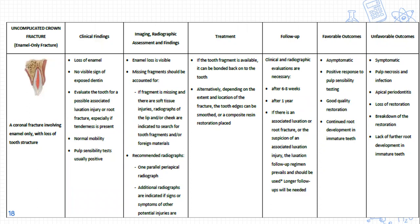Radiographic assessment: enamel loss is visible; missing fragment must be accounted for. If the fragment is missing and soft tissue injuries are present, radiographs of the lip and cheeks are indicated to search for tooth fragments and foreign material embedded in lacerated areas. Recommended radiograph: one parallel periapical radiograph; additional radiographs indicated if signs or symptoms of other injuries are present.